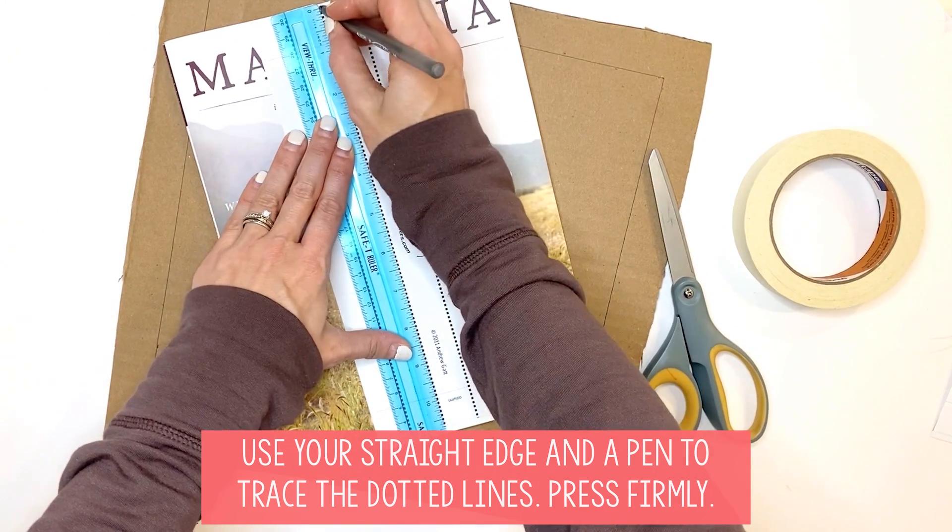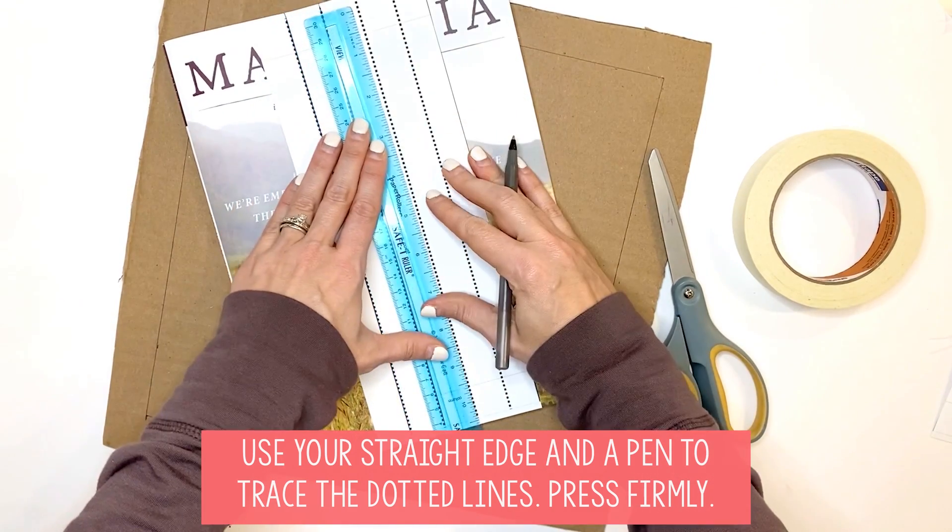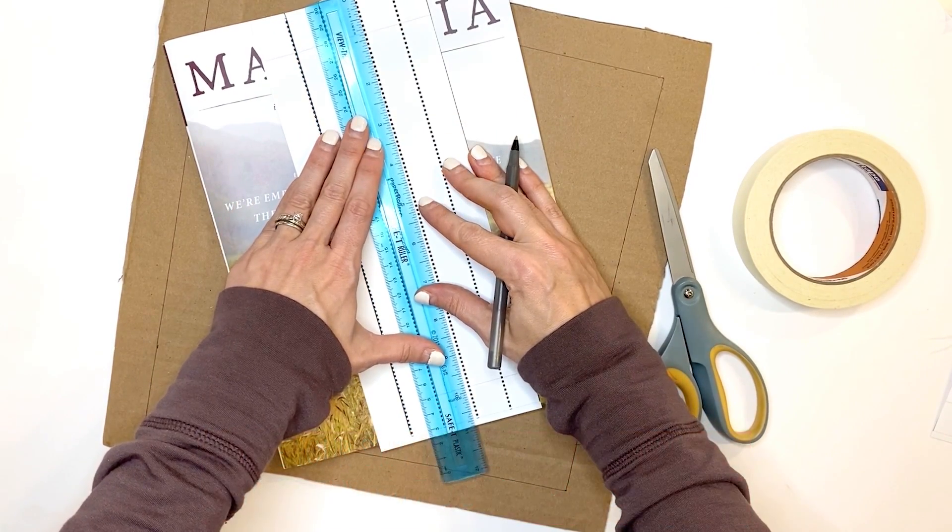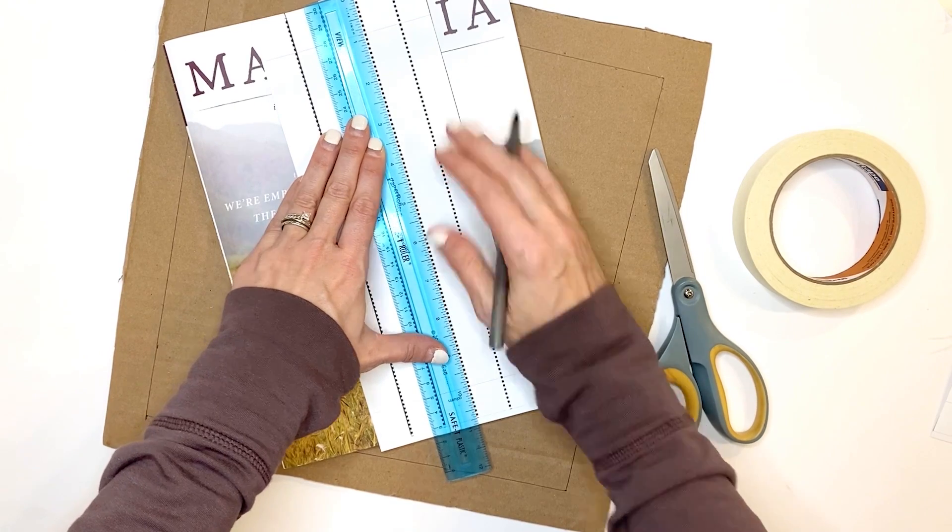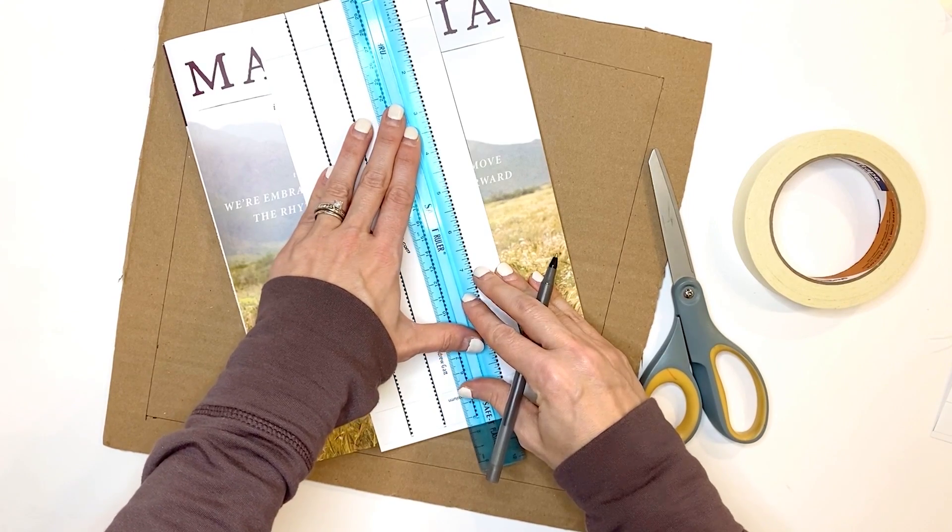If you end up getting crooked columns, your paper roller coaster will not be sturdy. So we're going to trace all of these dotted lines, pressing nice and firmly.